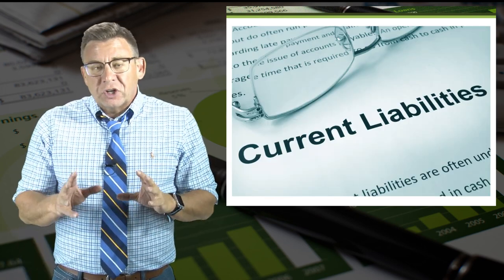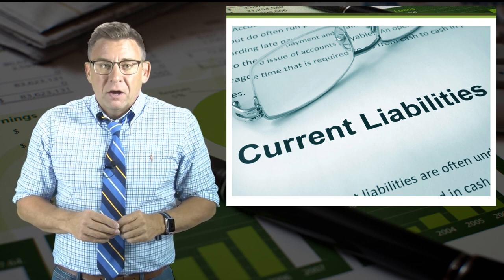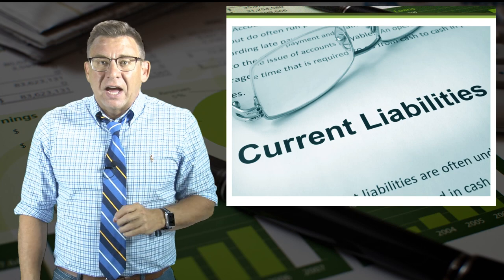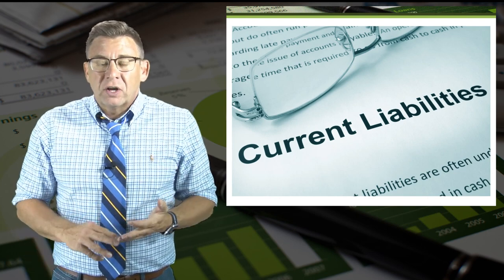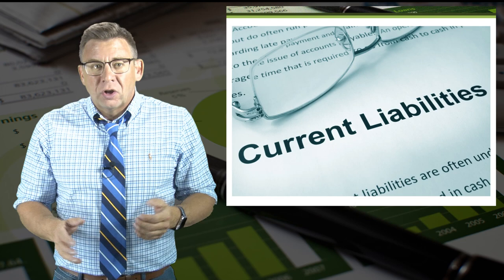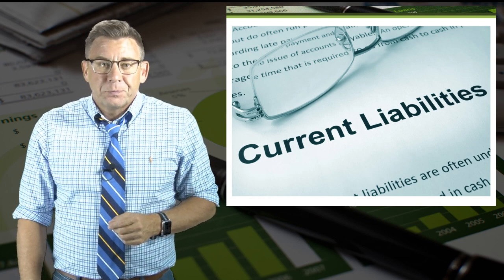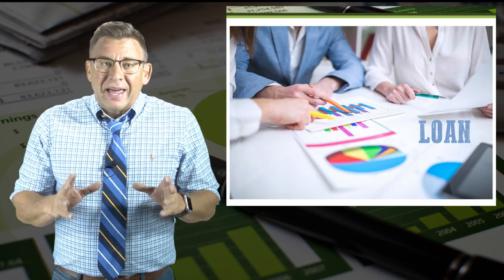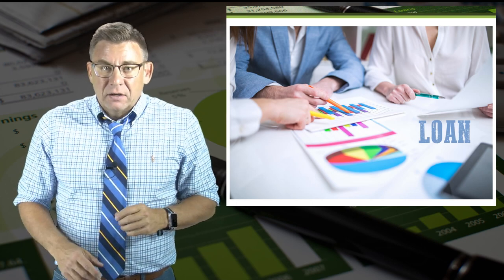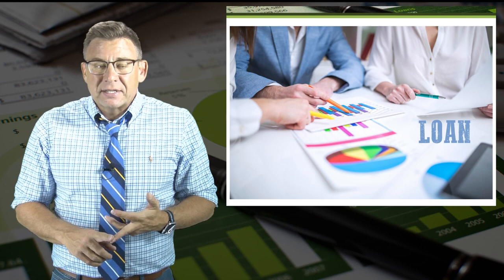Then we'll switch our focus to financing a company. First we will look at the financing of day-to-day operations by the use of current liabilities like payables, payroll, accrued liabilities, and warranties. Then we will look at the accounting for long-term debt financing like leases, bank loans, and bonds.